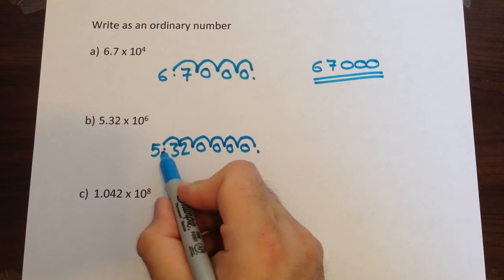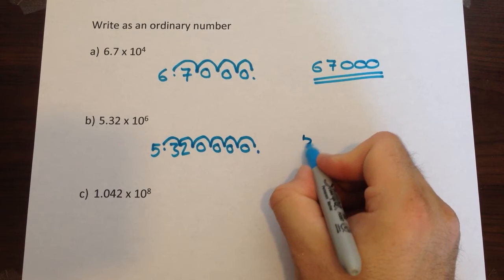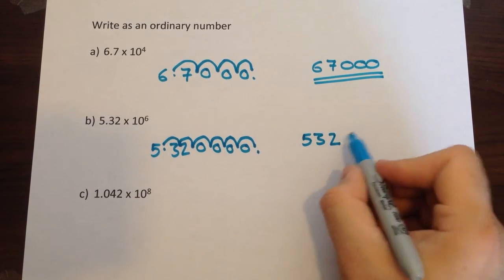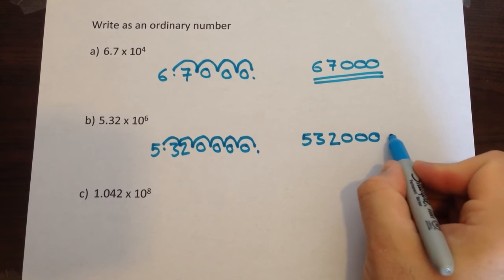So rewrite your answer without two decimal points. We've got 5, 3, 2, and four zeros: 5,320,000. That would be the answer for that one.